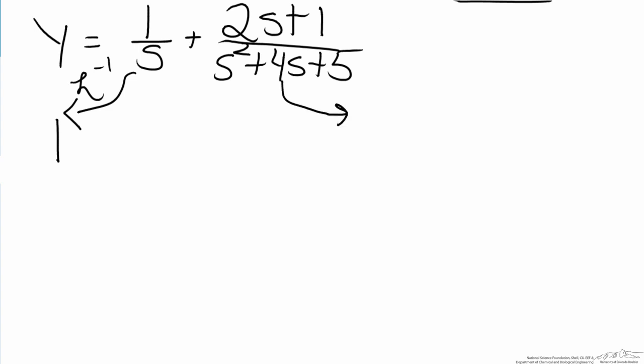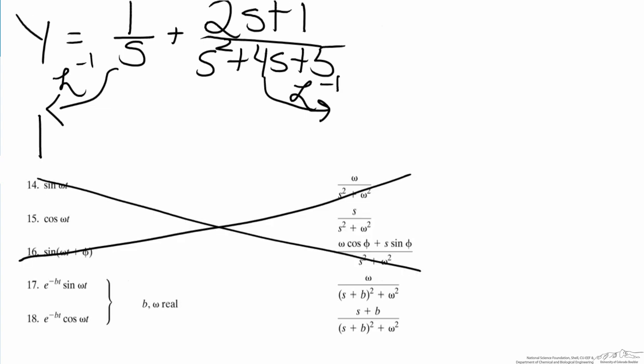In order to take the inverse Laplace transform of the second term, we have to go back to our Laplace transform sheet. As noted before, our focus here will shift on the bottom two equations because we don't have a perfect s squared plus omega squared in our denominator. But what we now need to do is find b and omega. In order to do that we have to complete the square of the denominator. So in order to complete the square, s squared plus 4s plus 5,